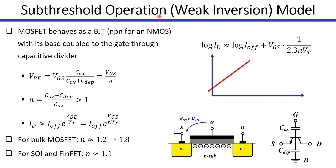In the sub-threshold or in the weak inversion region, there is no channel formation in the MOSFET, and we can see that it's actually an NPN structure, so it behaves like an NPN bipolar junction transistor. But the base is not directly connected to the gate; it is capacitively coupled. So we can say that the VBE is a fraction of the VGS, and we define this factor N, which is actually always larger than 1. So we can use the same exponential characteristics of the BJT to define the drain current, but the VBE will be replaced by VGS over N.